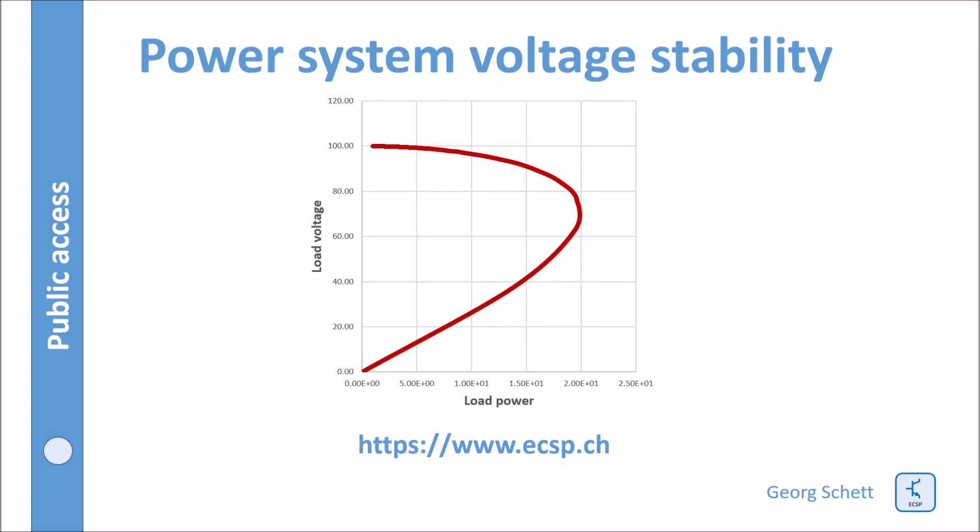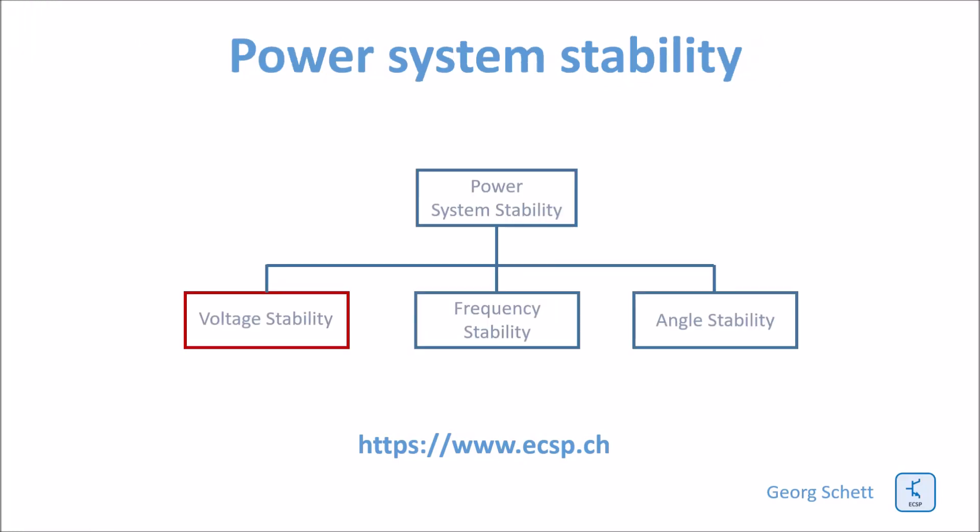Today let's talk about power system voltage stability. The power system stability is based on three interrelated pillars: voltage stability, frequency, and angular stability. Today we will address voltage stability.